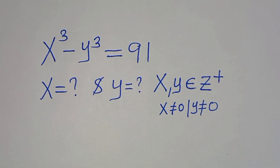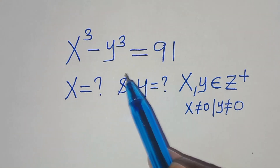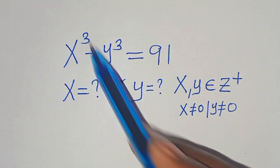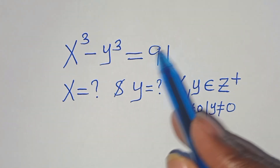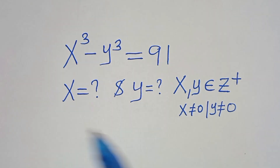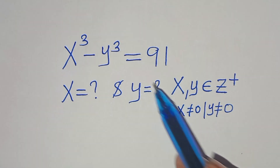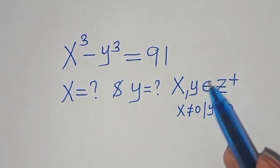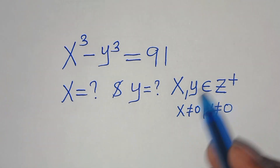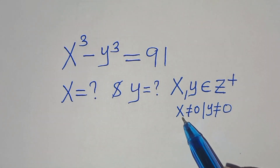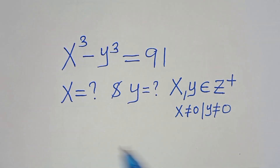Hello everyone, you're welcome to solve this nice algebra problem: x to the power of 3 minus y to the power of 3 is equal to 91. What is the value of x and what is the value of y, given that x and y are members of positive integers, and such that x is not equal to 0 as well as y is not equal to 0.